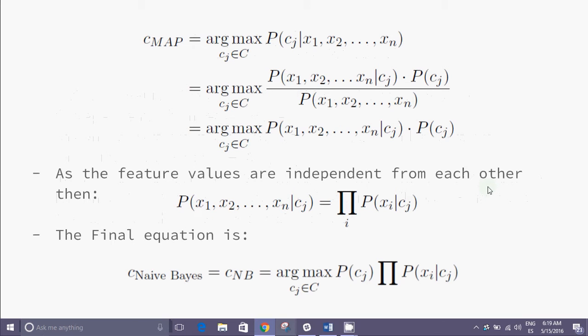Let us now calculate c_MAP which is maximum of P(cj | x1, x2, ..., xn) where cj belongs to C. The probability of cj conditioned on x1, x2, x3, etc. can be written as P(x1, x2, x3, ..., xn | cj) times P(cj) divided by P(x1, x2, x3, ..., xn). As P(x1, x2, x3, etc.) is constant and features are independent from one another, we can ignore this term.